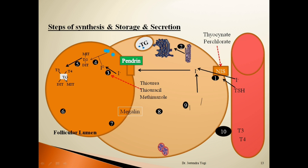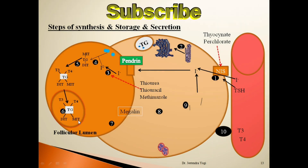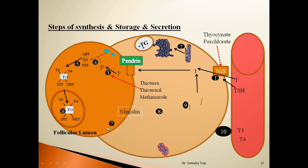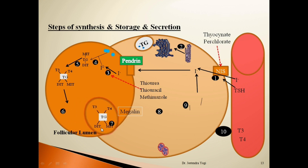After synthesizing T3 and T4, these are stored in the colloid substance of the lumen for several months. It is estimated that stored thyroid hormone can meet the body's requirement for one to three months. To be secreted, thyroid hormone-containing thyroglobulin moves toward the apical surface of the thyroid follicle and, with the help of megalin receptors, is taken into the thyroid follicular cell by endocytosis.